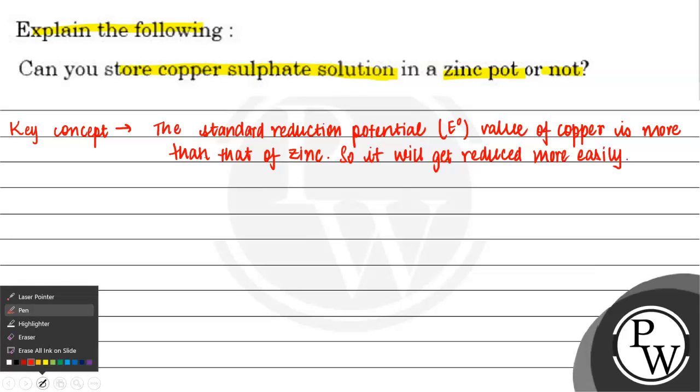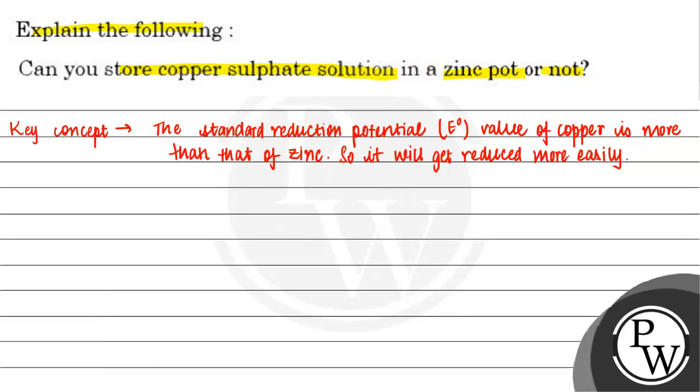Now, let us solve this question. We will discuss standard reduction potential. E0 of Zn2+/Zn is minus 0.76 volts.